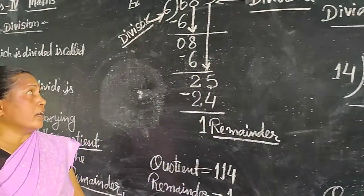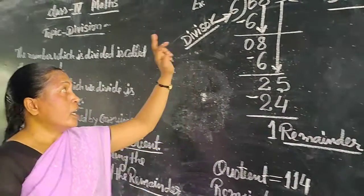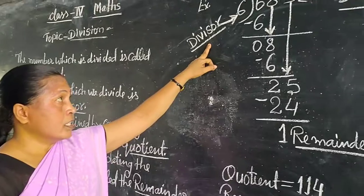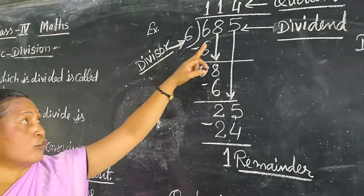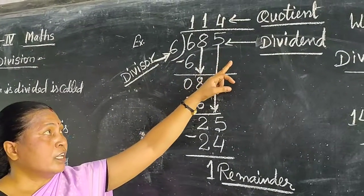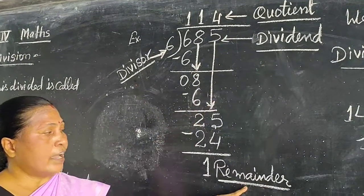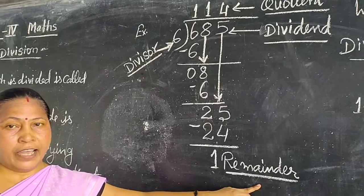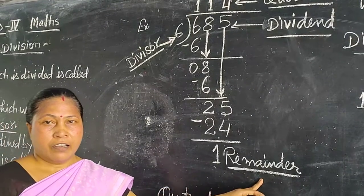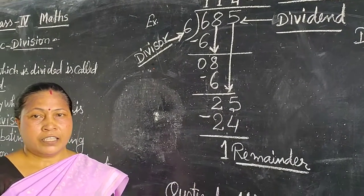All of you remember: divisor, quotient, dividend, and remainder. Okay. Thank you.